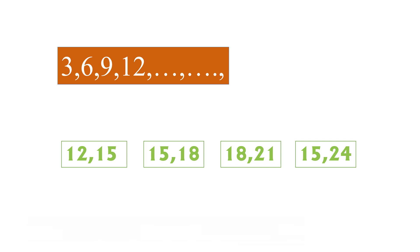Here we have to complete the sequence: 3, 6, 9, 12, and after that we have two blank spaces. The numbers start from 3 and we keep adding 3 to get the next number — 3+3=6, 6+3=9, 9+3=12. If we skip count starting from the same number, we can apply the multiplication table: 3×5=15, 3×6=18. So the correct answer is 15 and 18.